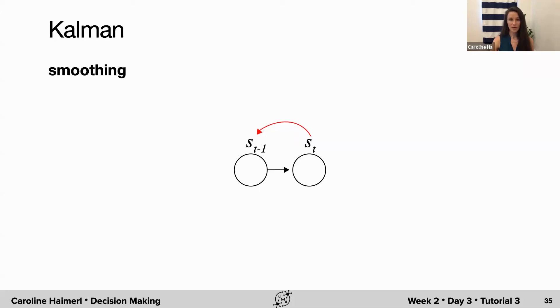After running the Kalman filter now, we will also run the smoothing step, where we go backwards right from the last time point to the first, and we're smoothing over the latent estimates that we got from the filtering.